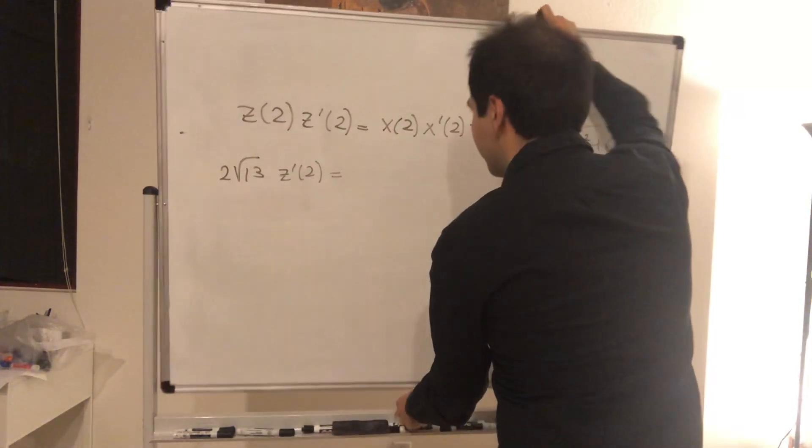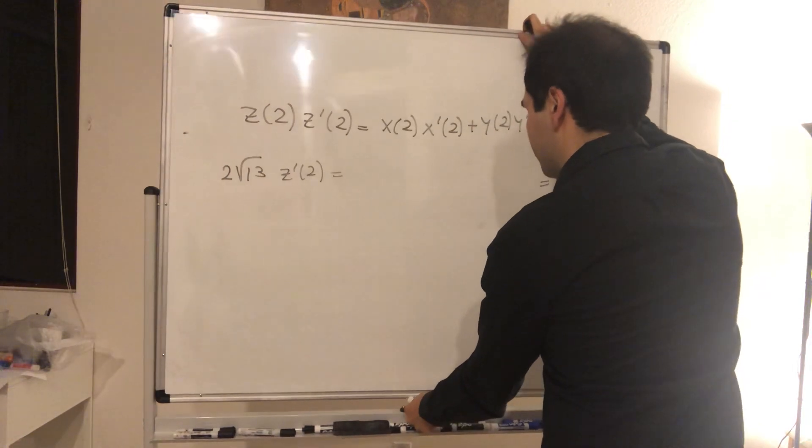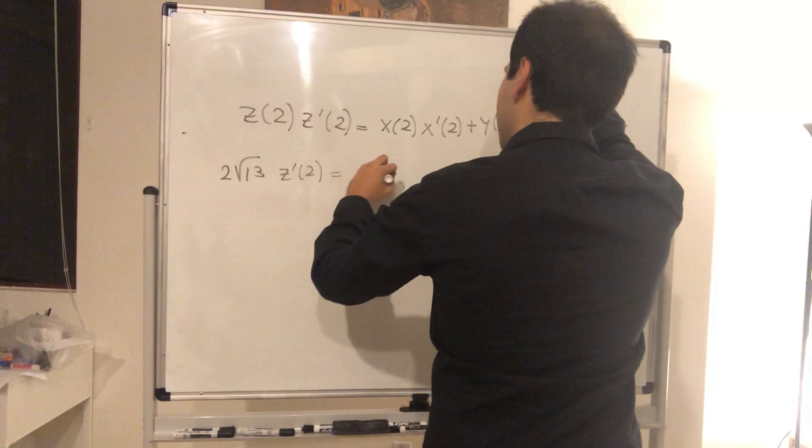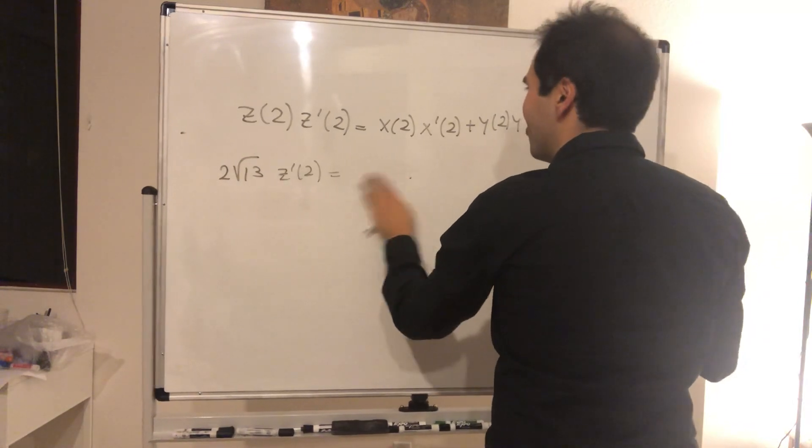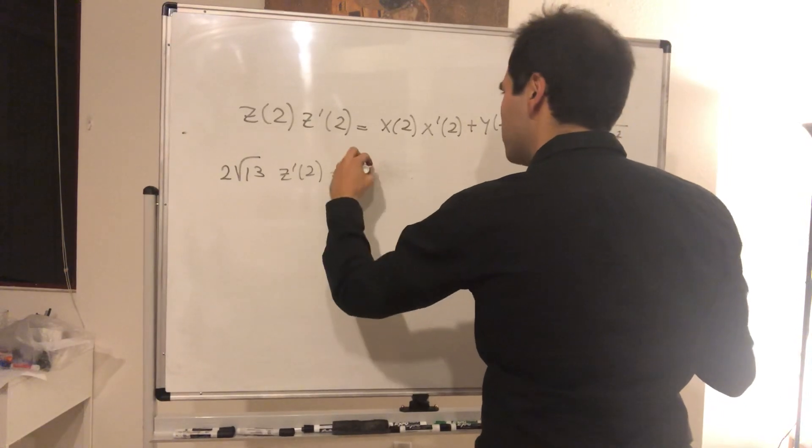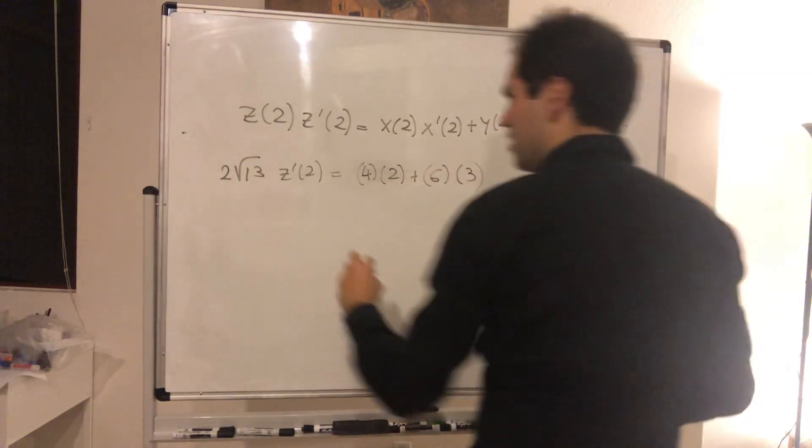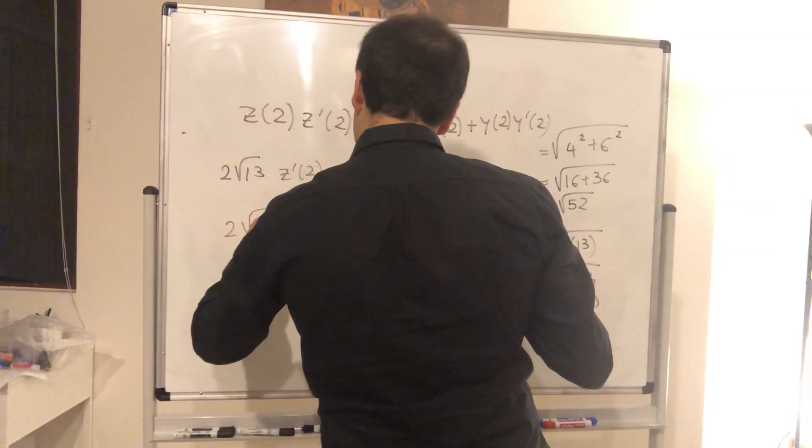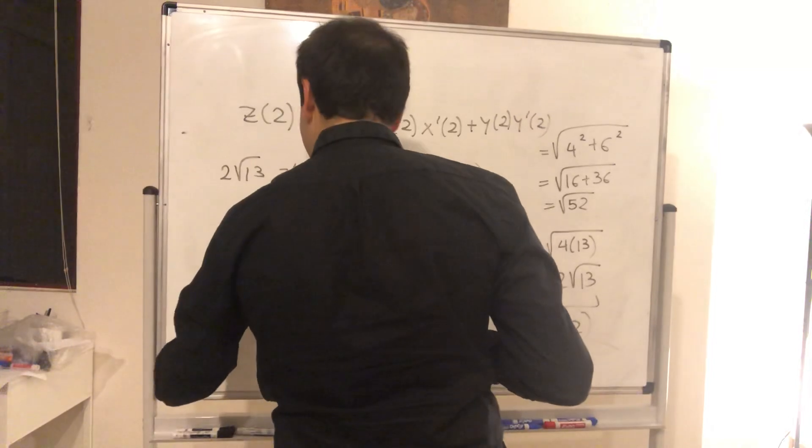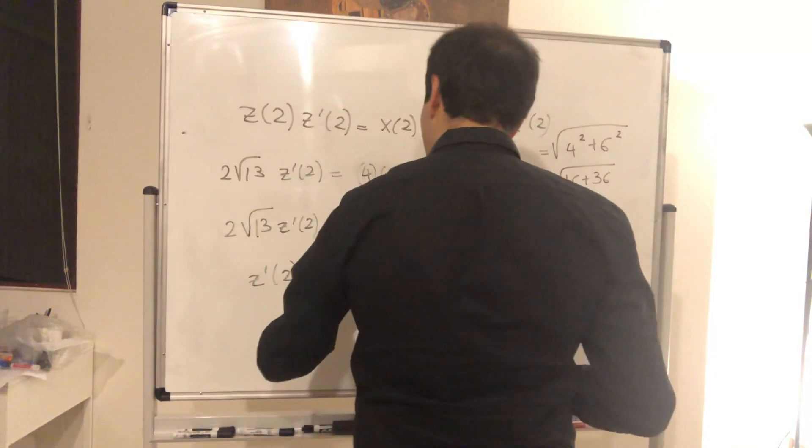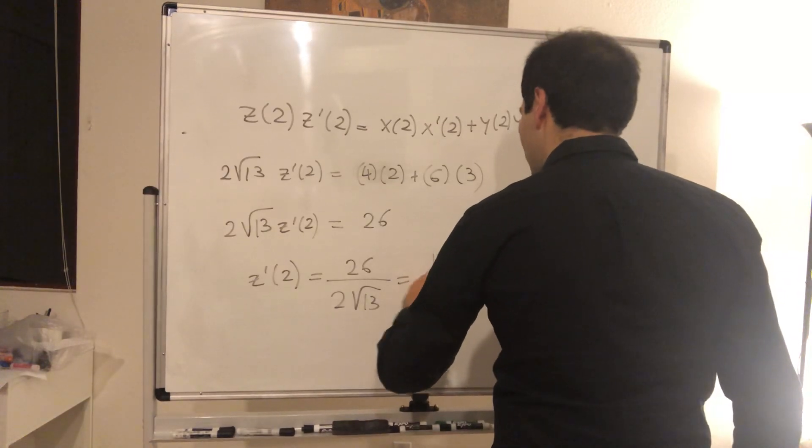Then x was the slower car, so that's four times two, and then plus six times three, which again becomes two square root of 13 z prime of two. This becomes eight plus 18, which is 26. And therefore z prime of two, that becomes 26 over two square root of 13, which is 13 over square root of 13. Nicely enough, this simplifies to the square root of 13.